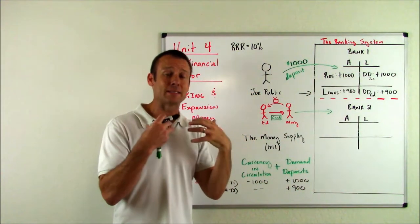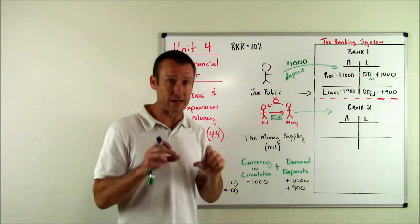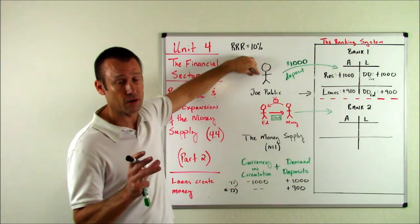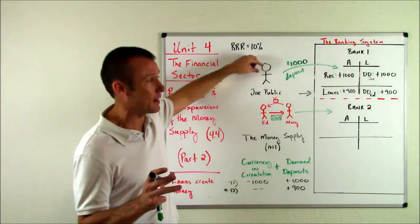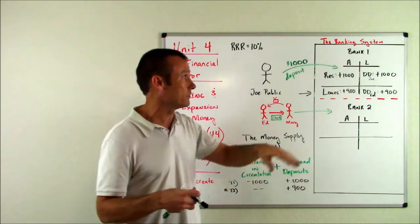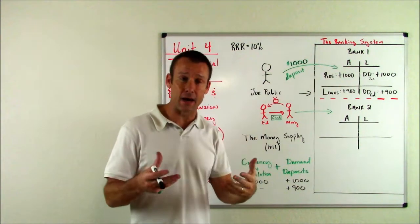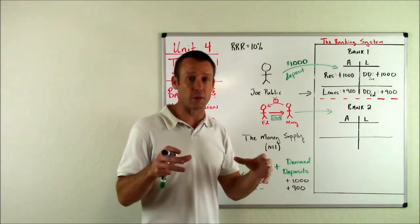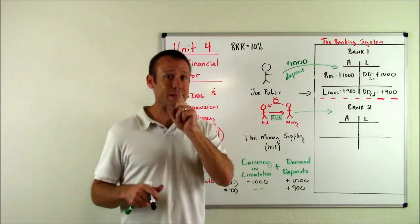Key takeaway, the deposit did not change the money supply. You see, Joe could buy a thousand dollars of goods and services before he made the deposit. After he made the deposit, he can still buy a thousand dollars of goods and services. And of course, the bank cannot buy any goods and services with his deposit. So the money supply did not change, but what did change?